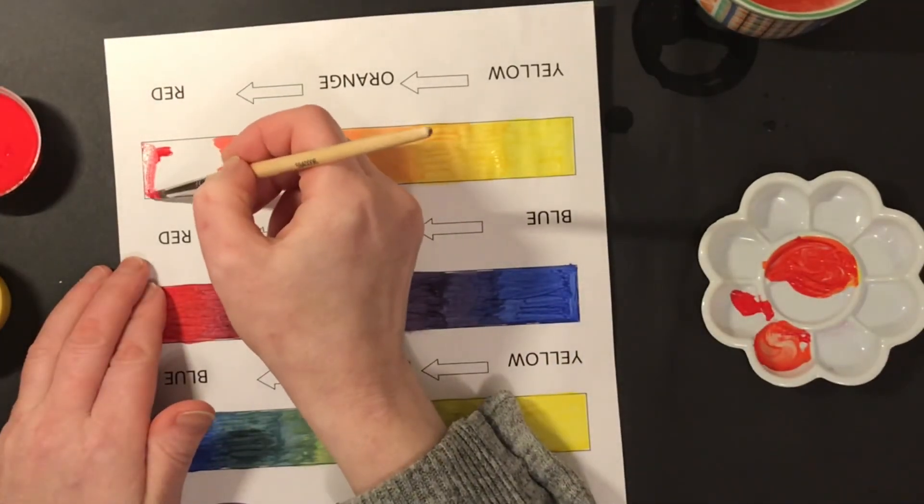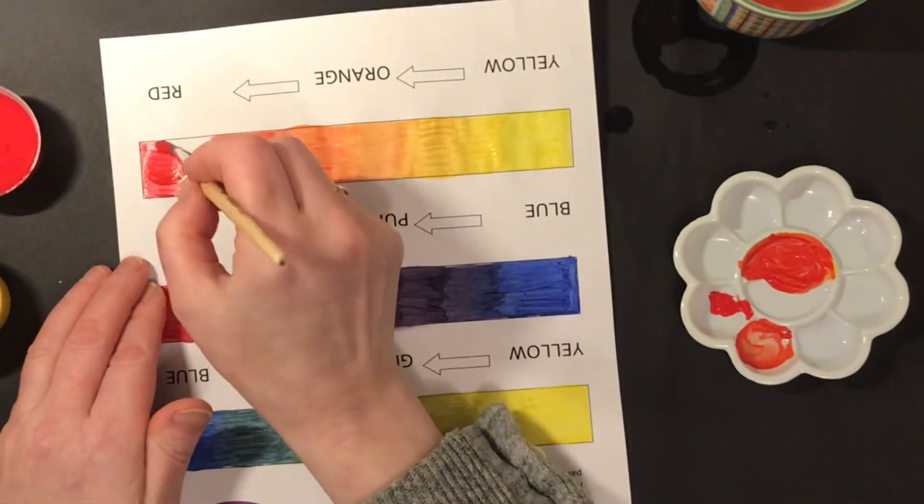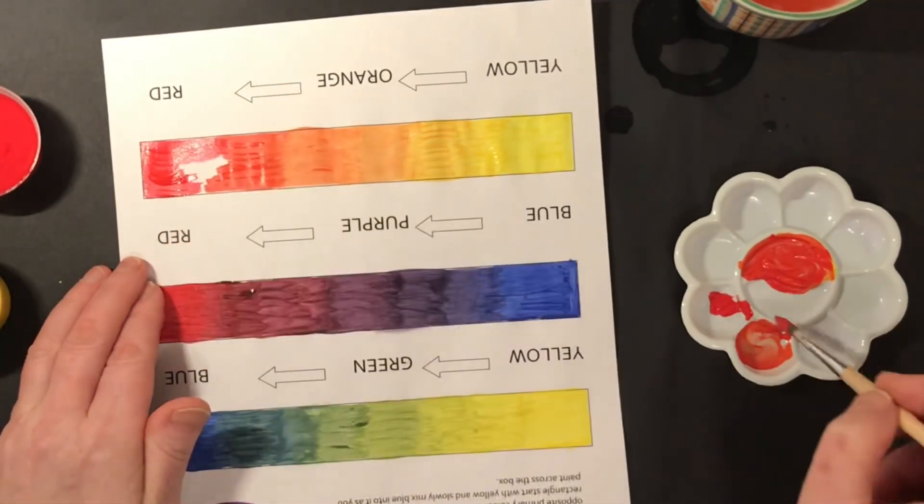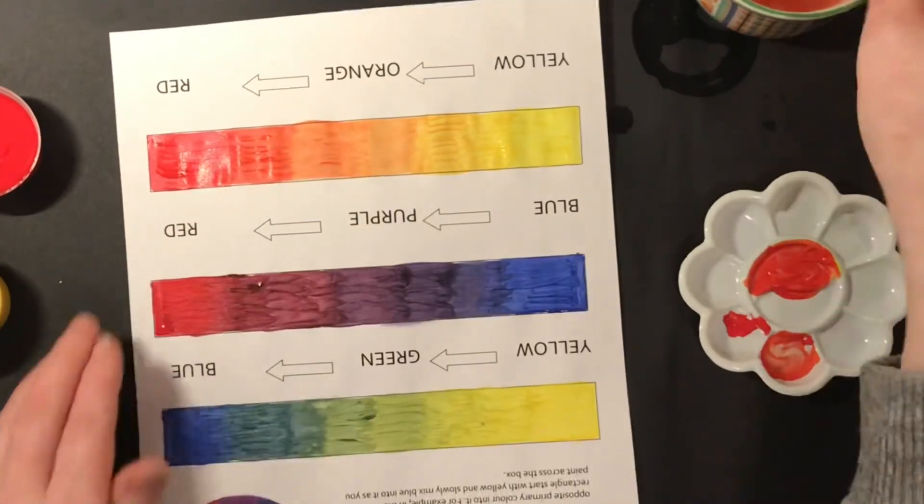Lastly here now I'm just adding the red. I'm just blending this in to the red-orange. And that is your three harmonious blends completed.